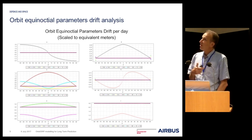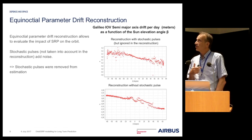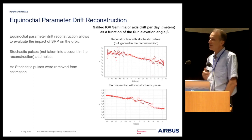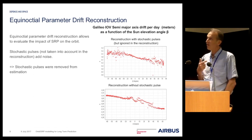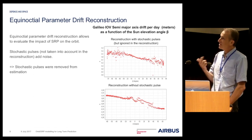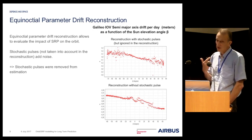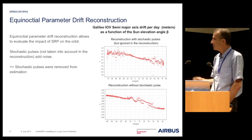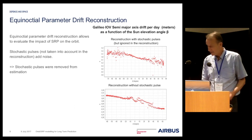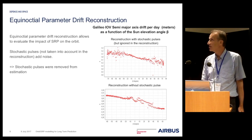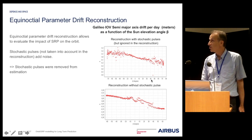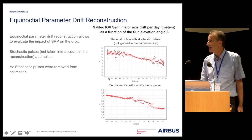Next, we perform what we call the ECCOM parameter drift reconstruction, which means that we take the estimated ECCOM parameters and compute the drift of the orbit. During this process, we ignore the stochastic pulses. So if the estimation of the ECCOM parameters has been made with stochastic pulses, there is strong noise due to their presence. We removed the stochastic pulses from the estimation and got much cleaner curves.